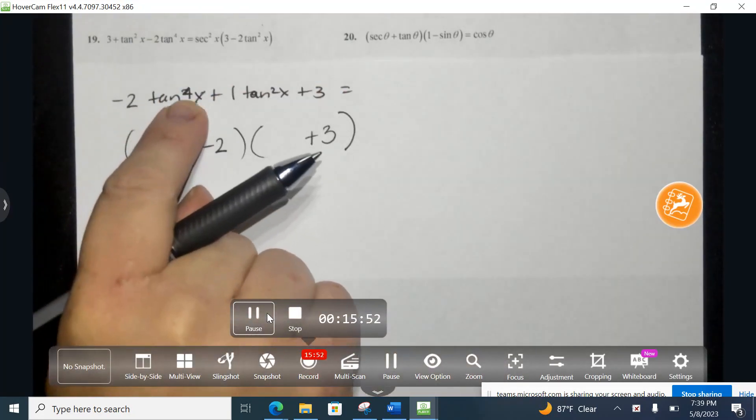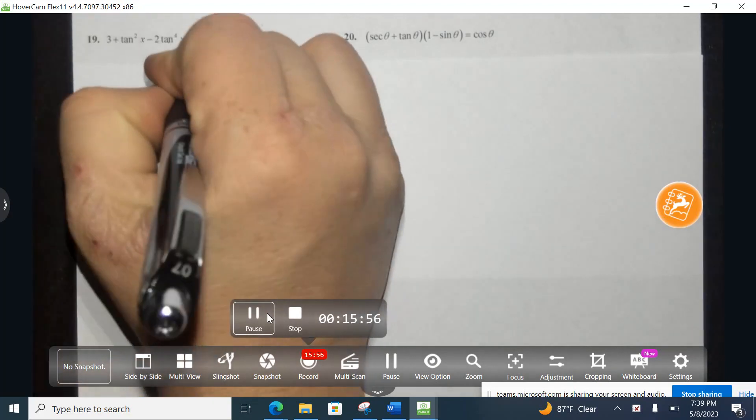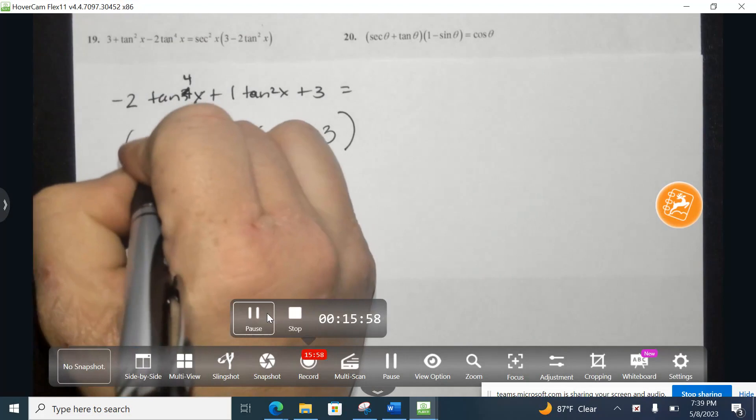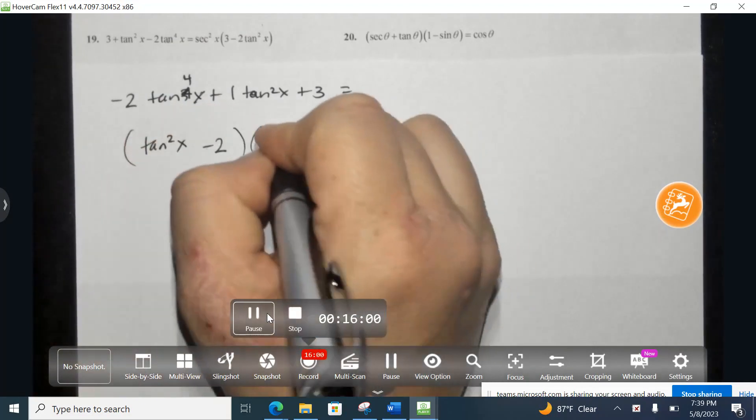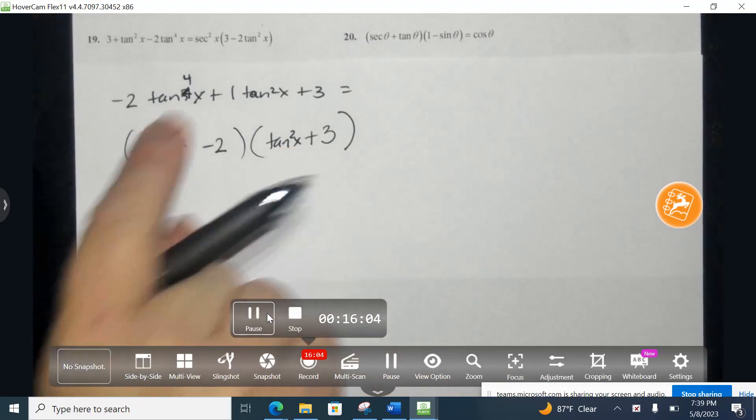Okay, so if I take this 4, remember this is not tangent 4x, it's tangent to the fourth, and so I evenly split that at tangent squared and tangent squared. Okay, so I multiply these, I get tangent to the fourth, awesome.